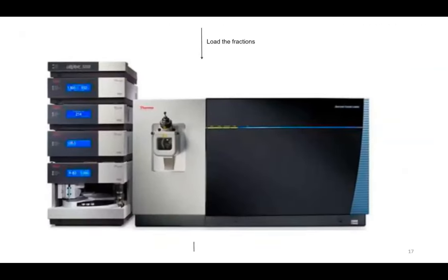The fractions were subjected to an Orbitrap Fusion Lumos, which is a mass spectrometer coupled with another round of liquid chromatography. Once the samples are loaded, the machine automatically injects each fraction into the liquid chromatography to further reduce sample complexity, which are then automatically loaded into the mass spectrometer. The peptides are ionized and then fragmented into smaller peptide fragments, which can be used to determine their amino acid sequences. The resulting peptide sequences are then searched against a protein sequence database to identify the proteins that match the peptide sequences.